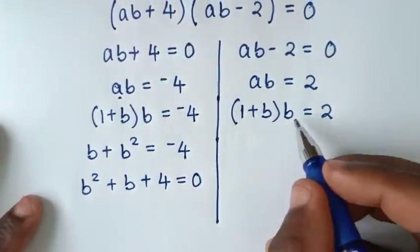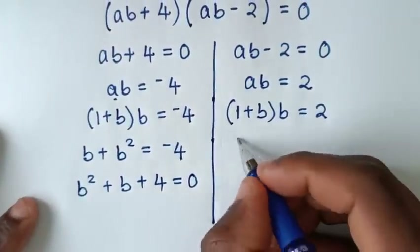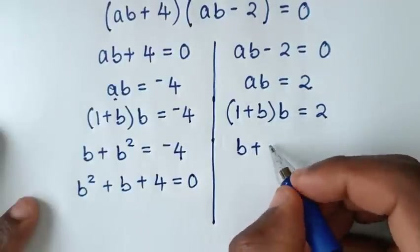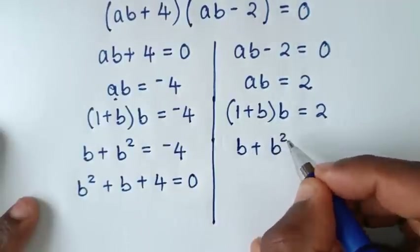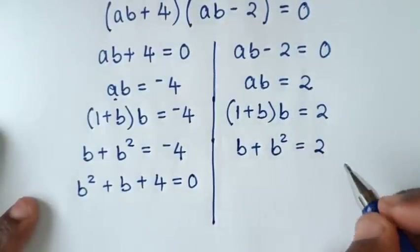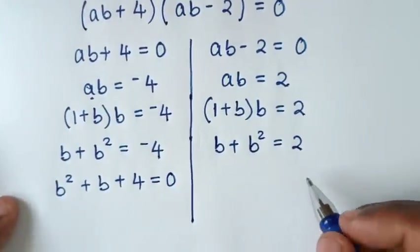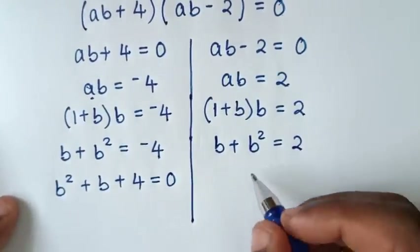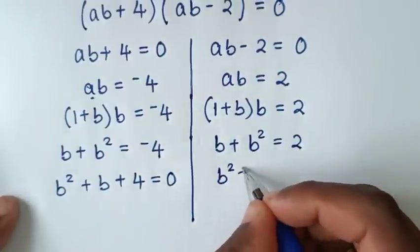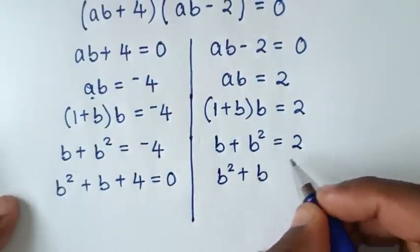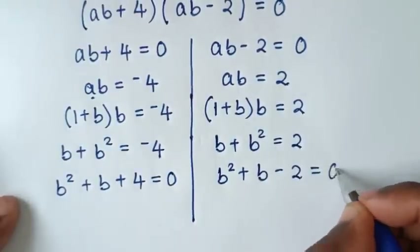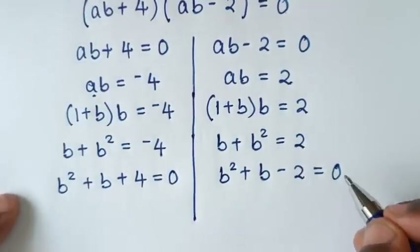Also for the second equation: b×1 = b, plus b×b = b², equals 2. Then rearranging: b² + b - 2 = 0.